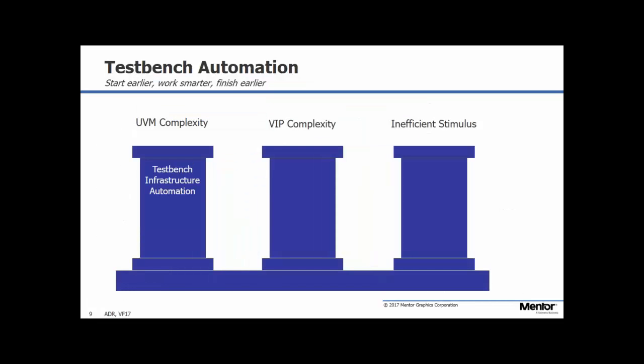Our solution to this is test bench automation. There are three issues: the complexity of UVM, the complexity of verification IP, and the issue of inefficient stimulus. Test bench automation is a combined flow which addresses all of these. To address UVM complexity, somehow we need to automate the generation of UVM test benches. To do this we introduced the UVM Framework, which is essentially a way of rapidly generating your UVM infrastructure so that you don't have to write all that stuff yourself. We also need to automate the generation, instantiation, configuration, and bring-up of verification IP.